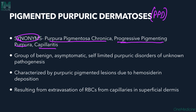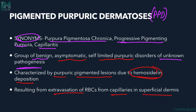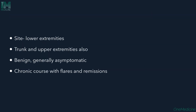PPD represents a group of benign, asymptomatic, self-limited purpuric disorders of unknown pathogenesis. They are benign conditions that don't cause significant symptoms and are self-limiting. Purpuric pigmented lesions are seen due to hemosiderin deposition, resulting from extravasation of RBCs from the capillaries into the superficial dermis.